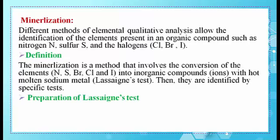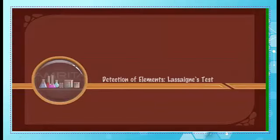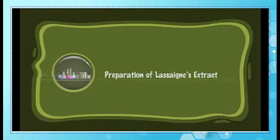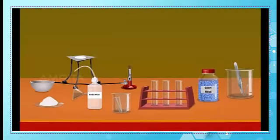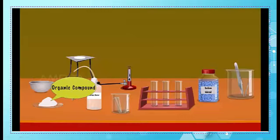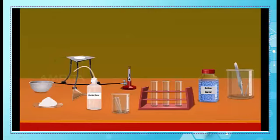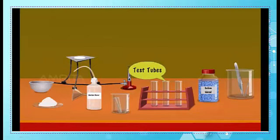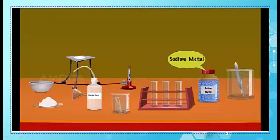How to prepare Lassaigne's extract — let's watch this video. Detection of elements: Lassaigne's test. Preparation of Lassaigne's extract. We require a China dish, organic compound, funnel, tripod stand, wire gauze, distilled water, Bunsen burner, fusion tubes, test tube, sodium metal, small spatula, and forceps.